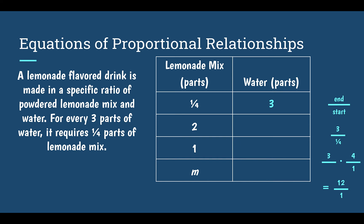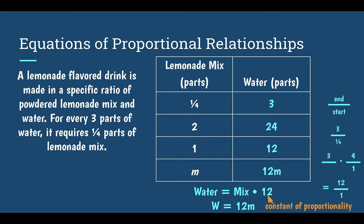When you are dividing fractions, you keep, change, flip. I keep the top, change to multiplication, and flip the bottom fraction. So one fourth becomes four over one. Then I multiply: three times four is twelve, and one times one on the bottom is one, giving twelve over one, or just twelve. So our constant of proportionality is twelve — we are multiplying by twelve. If I had two parts of lemonade mix, I multiply by twelve to get twenty-four parts of water. One part of mix gives twelve parts of water. For an unknown amount of mix m, I get twelve m parts of water. So I can write the equation: w equals twelve m, where twelve is our constant of proportionality.